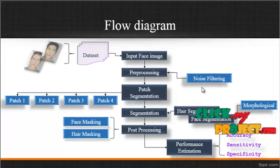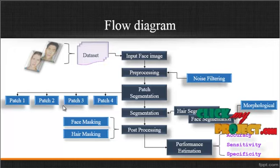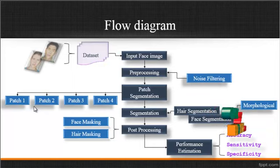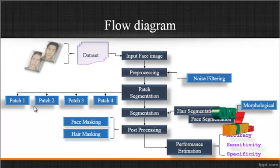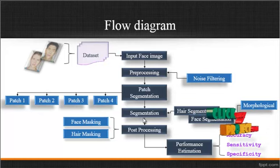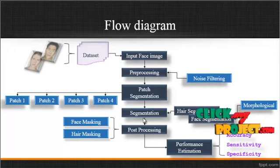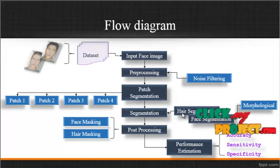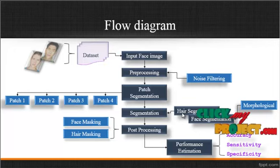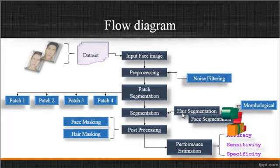After noise filtering, the noise-free image comes out from the pre-processing step. Then the patch segmentation is carried out. In this patch segmentation, we have to segment the image into 4 patches: patch 1, patch 2, patch 3, and patch 4. Then we have to perform segmentation — two types: first is hair segmentation, and second is face segmentation. In the hair segmentation process, we segment the hair regions and the other regions are eliminated as background.